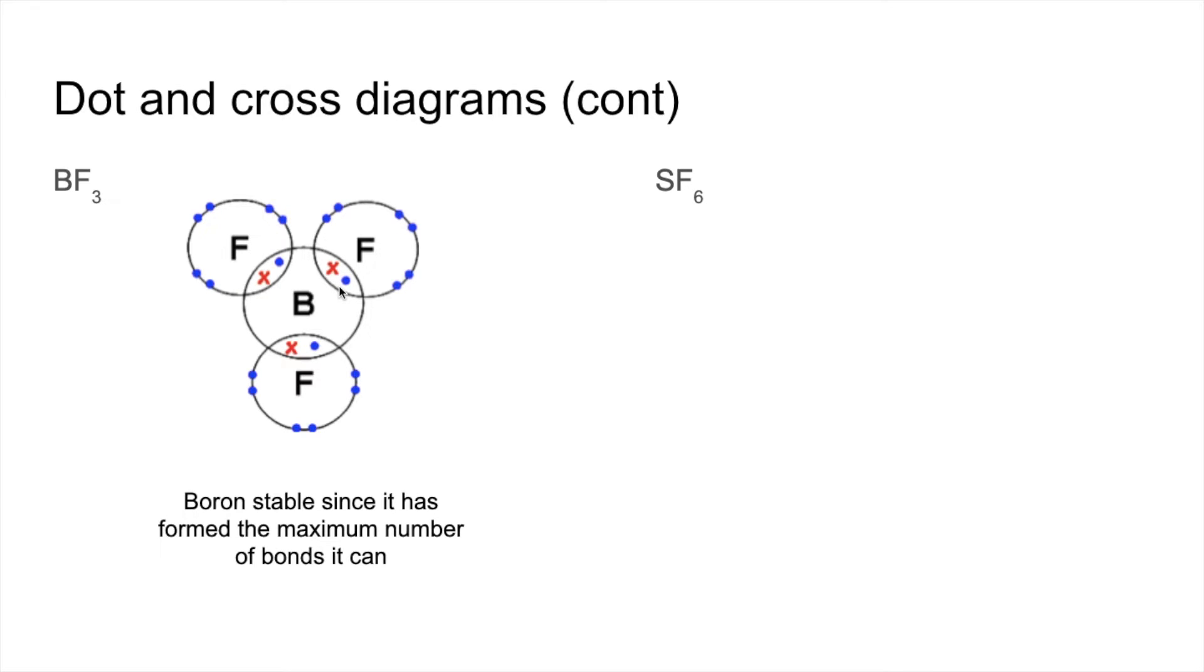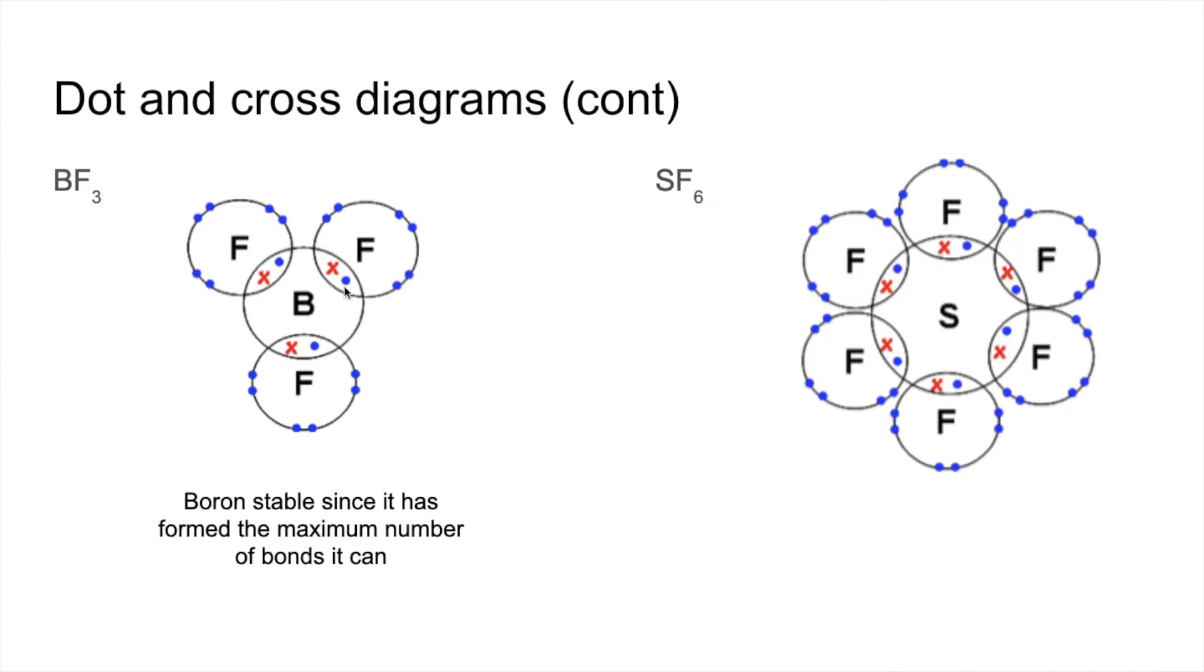SF6, sulfur hexafluoride. The unusual thing about this now is we've got more than eight electrons in this valence shell. We've actually got twelve. So why is that possible?